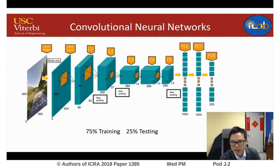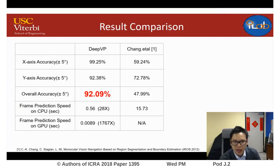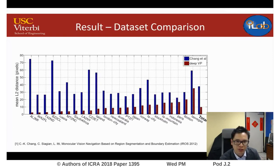Note that the testing data is unseen by the system. The performance of DeepVP is significantly better than the traditional Gabor-based algorithm. The accuracy is twice as good as the original, the prediction time is much faster — making it more suitable for real-time applications — and the L2 distance error is also four times smaller than the Gabor-based method.